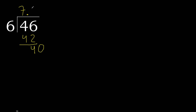6 multiplied by 7 is 42, which is greater. 6 multiplied by 6 is 36, which is not greater. Subtract.